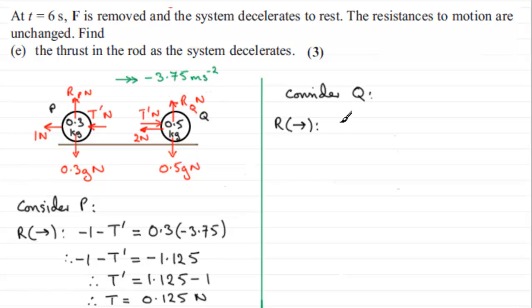which is acting to the right. That's going to be a positive force, minus though the 2 Newtons. Again, the reaction and the weight don't come into this because they're perpendicular to the direction we're resolving in. And this will equal the mass, which is 0.5 times the acceleration, which is minus 3.75.